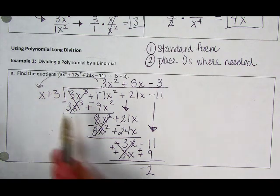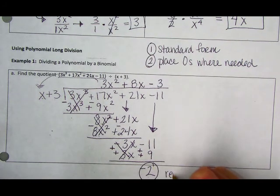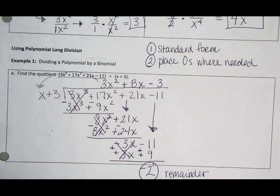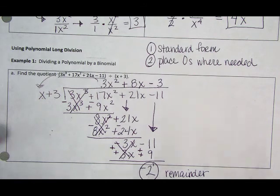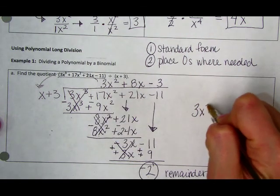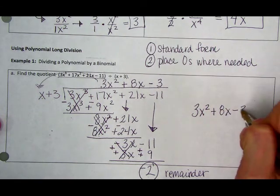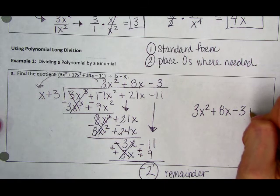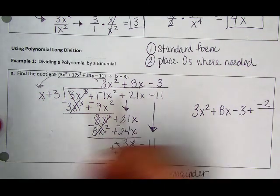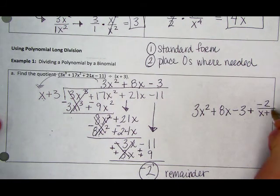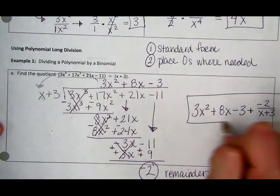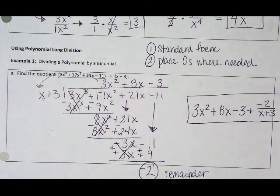Okay. So the quotient, the answer you get, so you go back to the top. So you're taking your whole terms up top. So I get 3x² plus 8x minus 3. And then I'm going to add, I always add, my remainder over the expression that I use to divide my bigger polynomial. So this is your answer. For example, one letter A.